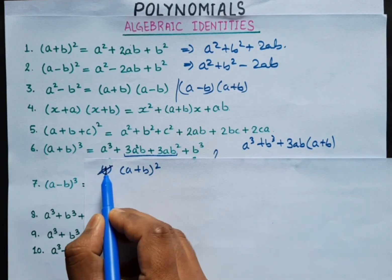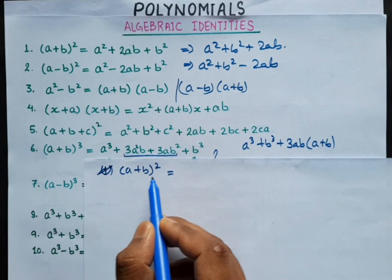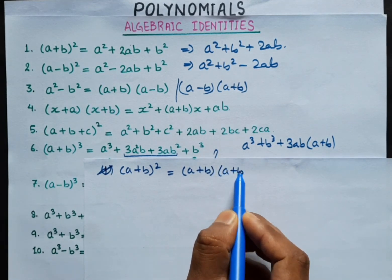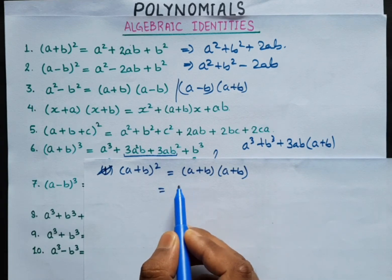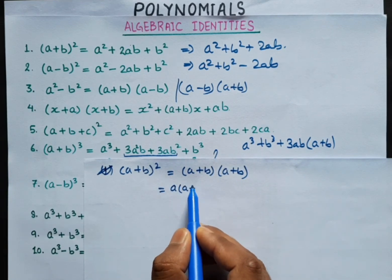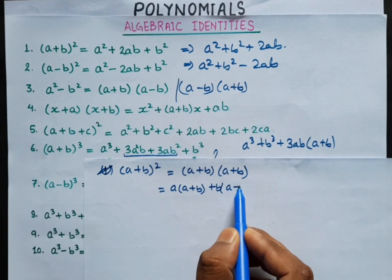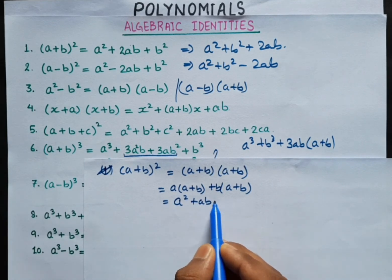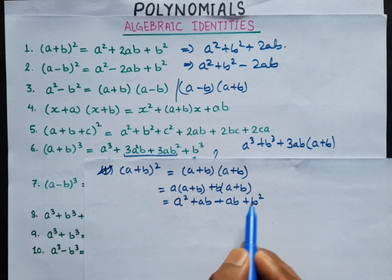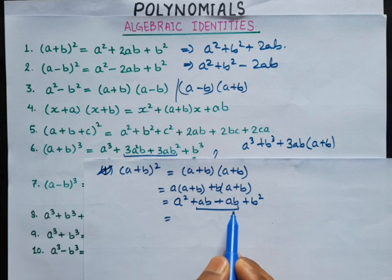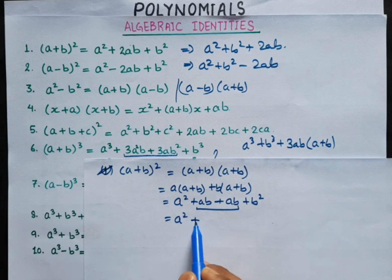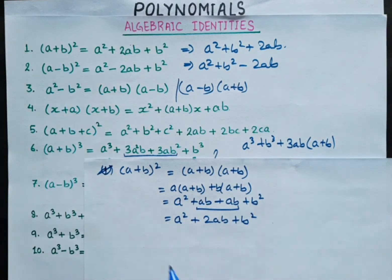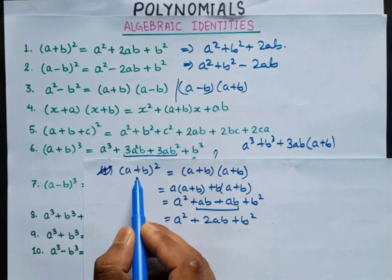So, (a + b) whole square is equal to (a + b) into (a + b). So, multiplying: a into a is a squared, a into b is ab, b into a is ab, and b into b is b squared. So, combining like terms, this gives us a squared plus 2ab plus b squared, which verifies identity number 1.